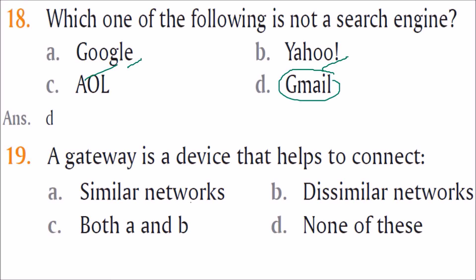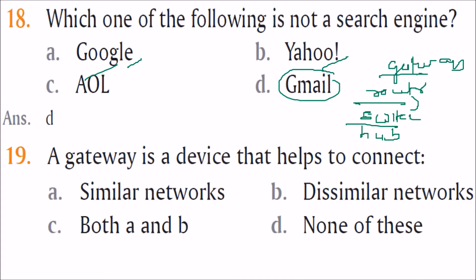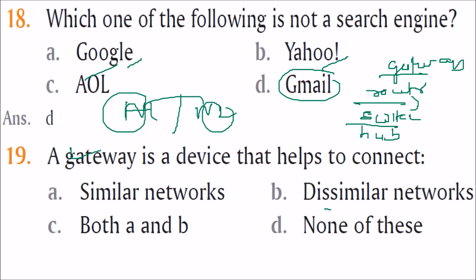A gateway is a device that helps connect networks. In networking layers — hub is physical layer, then switch, then router, then gateway. The main work of a gateway is to connect two networks that follow different protocols. If network 1 and network 2 follow different protocols, you use a gateway to connect them. So the answer is B — dissimilar networks.